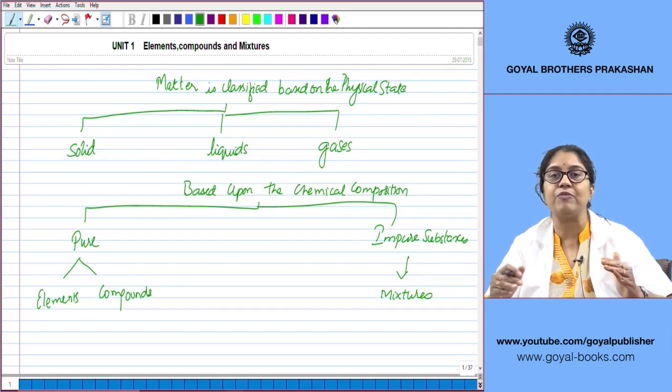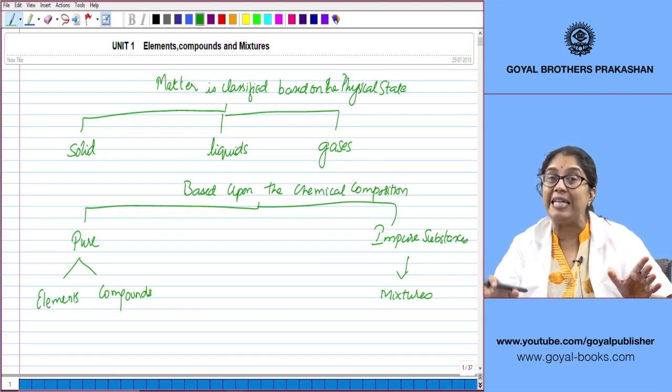So these examples tell us that though the physical state of matter may be the same, the appearance may be the same, but yet they are going to be different because they differ in their chemical composition.